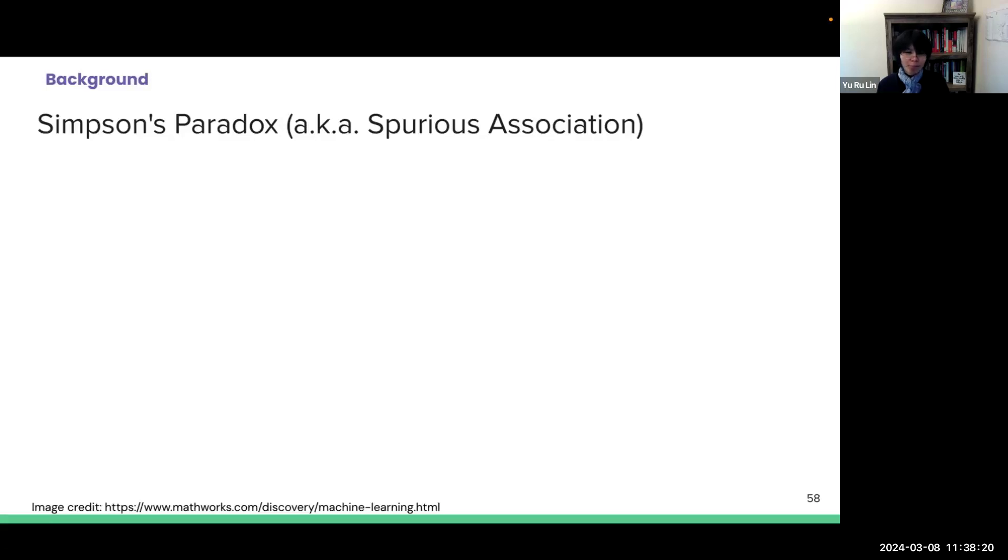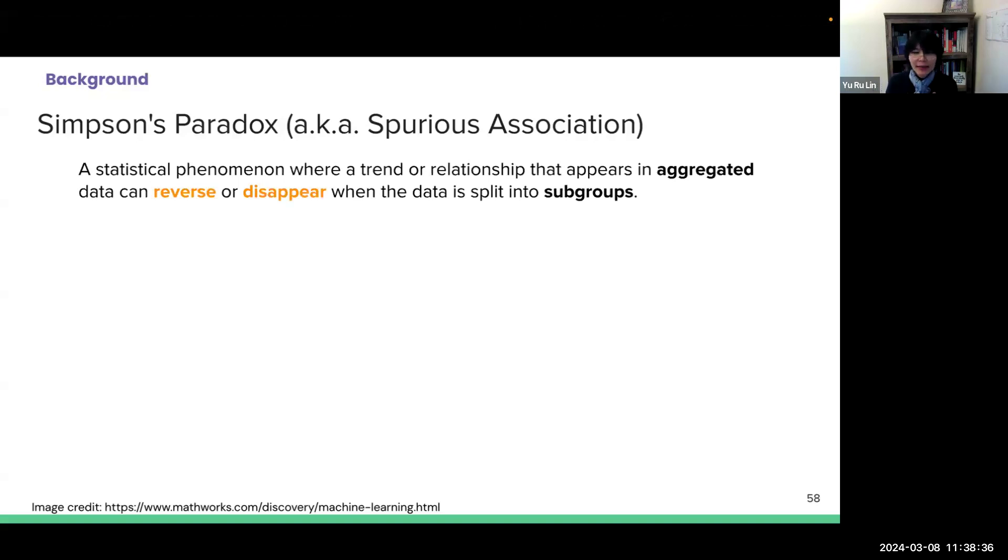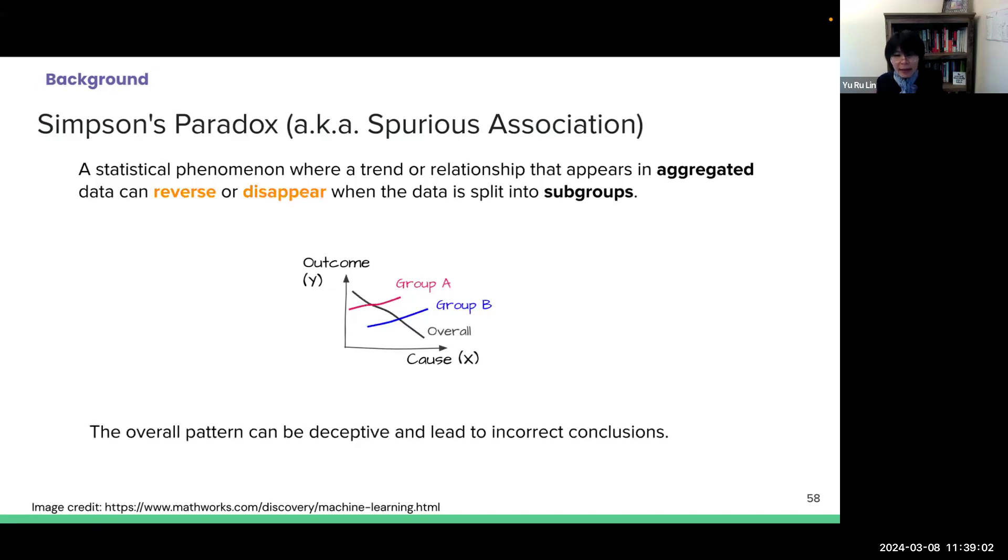All right. So many of you may already hear about this notorious Simpson's paradox, also known as the spurious association. So it's a statistical phenomenon where a trend or relationship that appears when the data is aggregated can reverse or disappear when the data is split into subgroups. So when Simpson's paradox occurs, the overall patterns can be incorrect, deceived, or lead to incorrect conclusions.